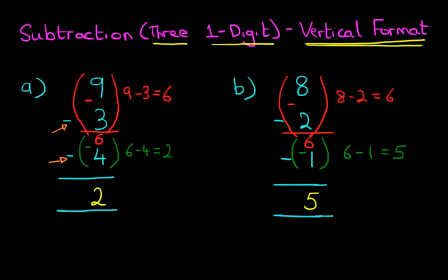So 8 minus 2 minus 1 equals 5. Now there is nothing more to it. That is subtraction of three one-digit numbers using the vertical format. Just do this step by step.